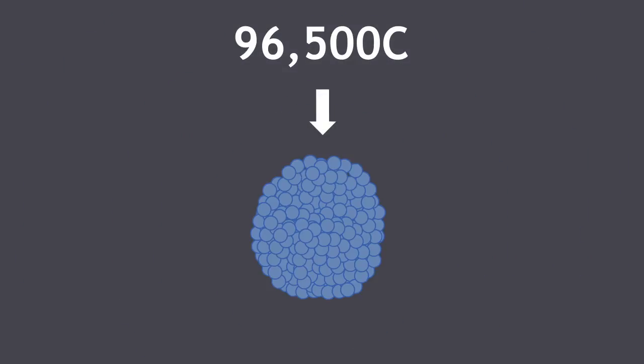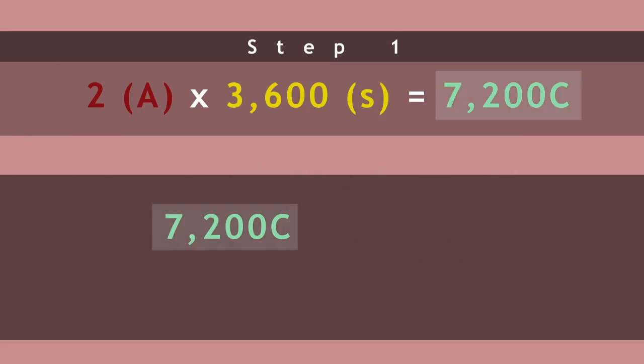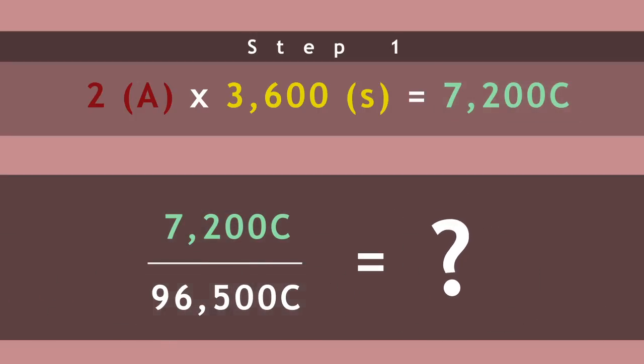Remember, 96500 coulombs represented every 1 mole of electrons transferred. We next need to find the number of moles of electrons that were actually transferred in our reaction. This you can do by dividing the answer from step 1 by 96500 coulombs. Do this now and resume the video to check your answer.